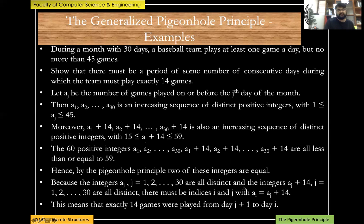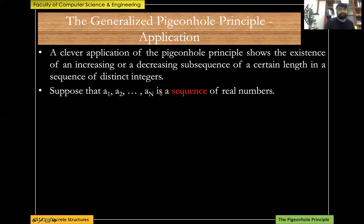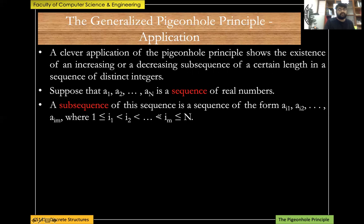A clever application of the pigeonhole principle shows the existence of increasing or decreasing subsequences. Suppose a_1, a_2, ..., a_n is a sequence of real numbers. A subsequence has the form a_{i1}, a_{i2}, ..., a_{im} where 1 ≤ i1 < i2 < ... < im ≤ n — it preserves the original order.